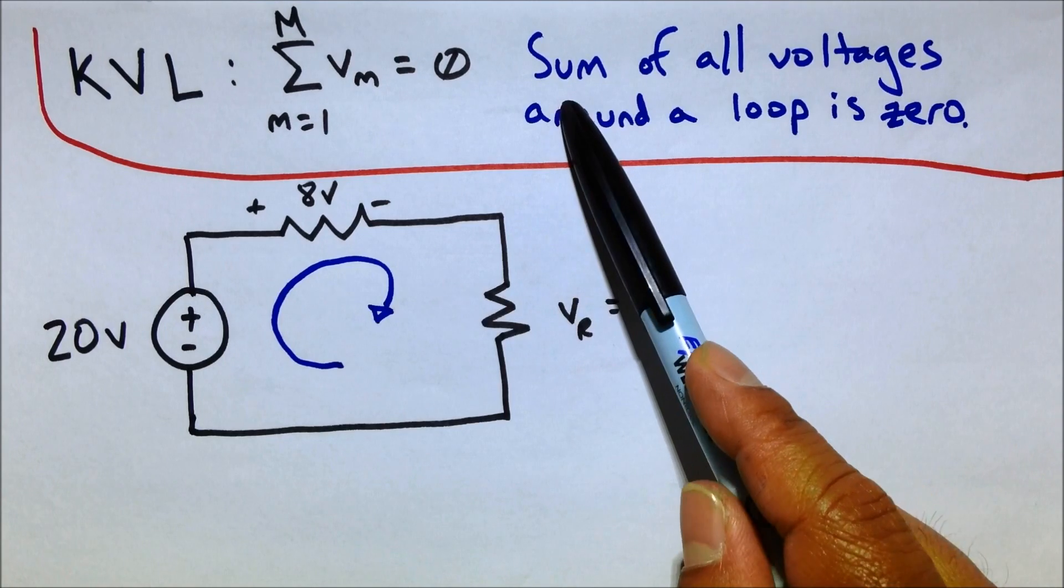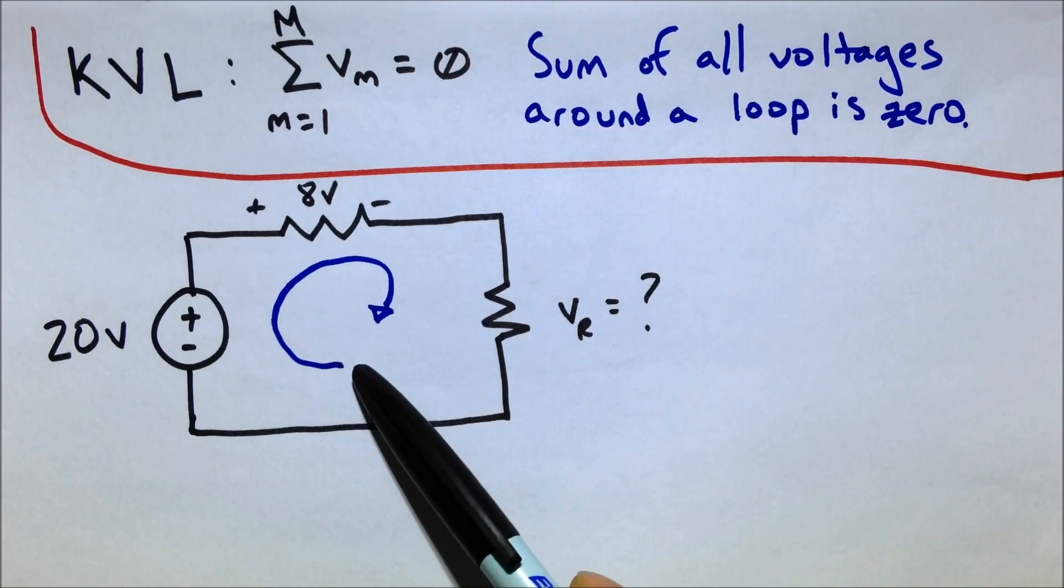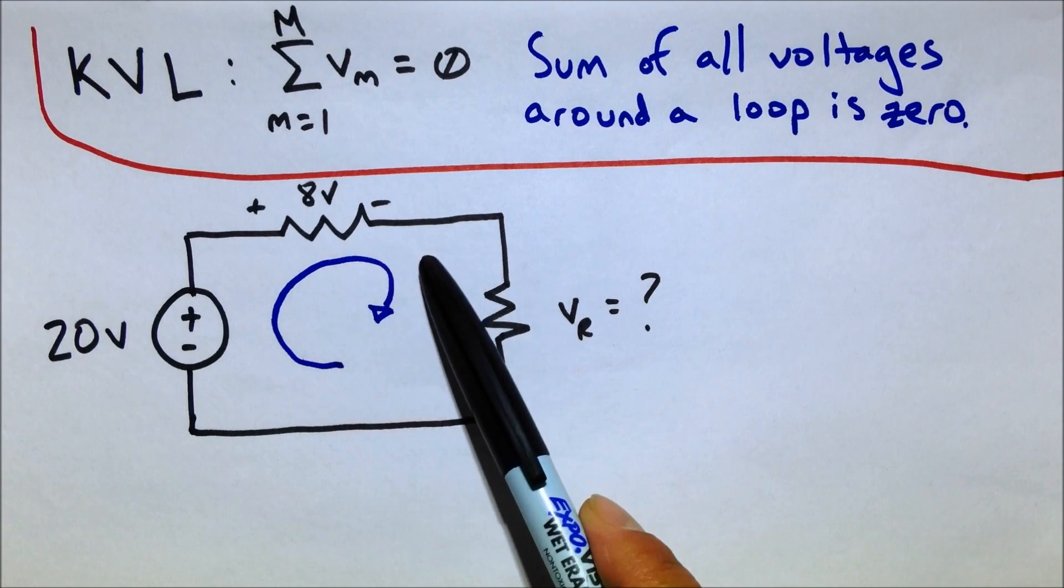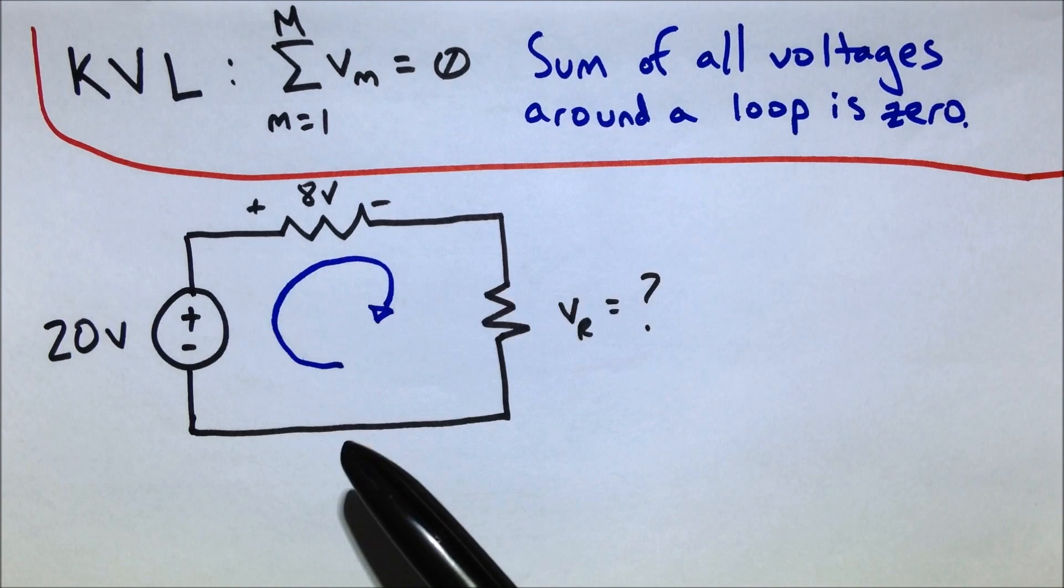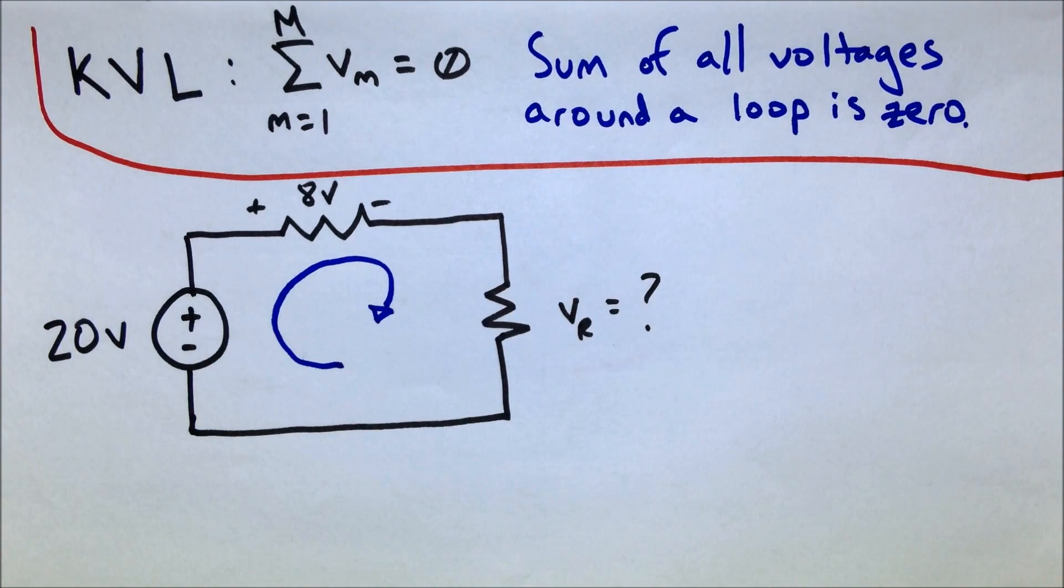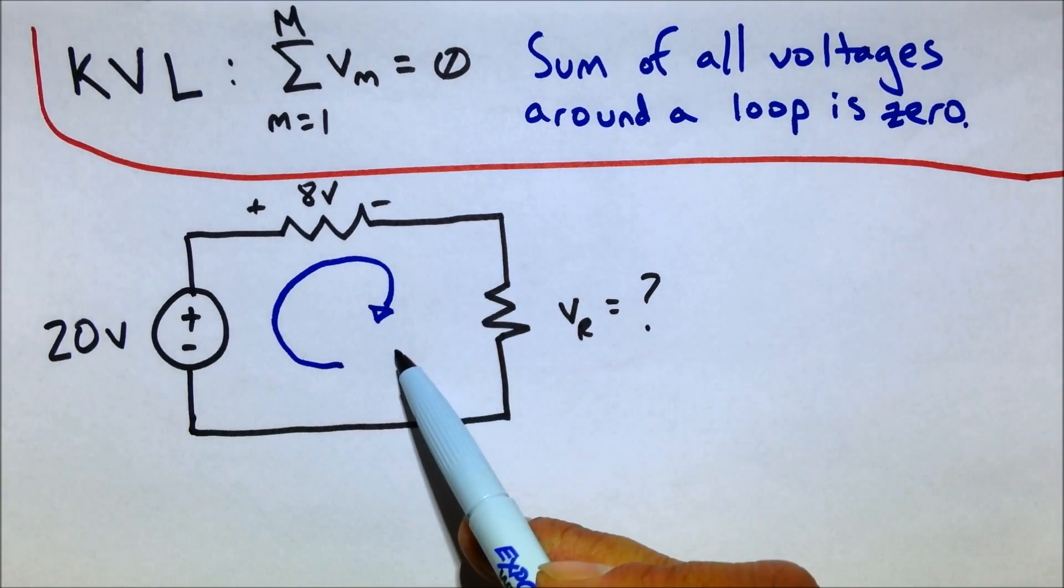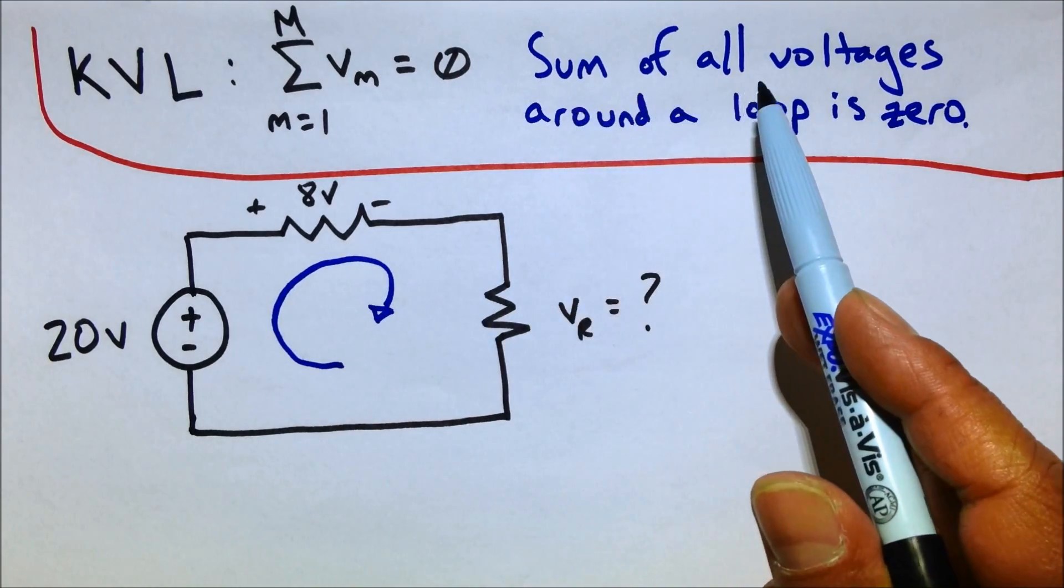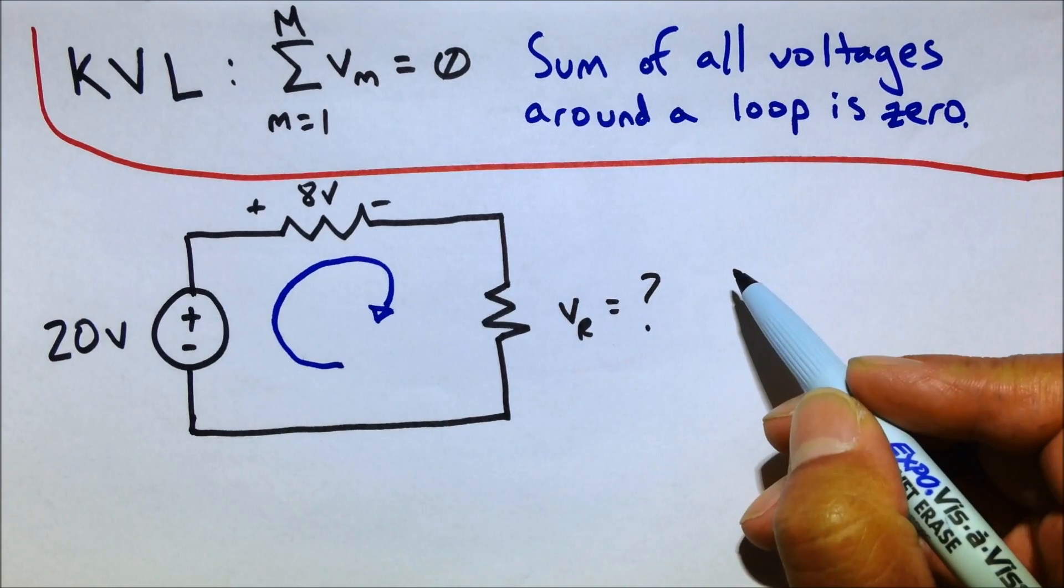Now, remember the law. The sum of all voltages around the loop is zero. And I'm going to define the loop going in this direction. It's arbitrary. You can define the loop going in that direction. It doesn't matter. It'll still help you solve for the missing voltage. But let's say we're going to define the loop as going in that direction. So we need to sum up all the voltages. And they all have to equal to zero when summed.